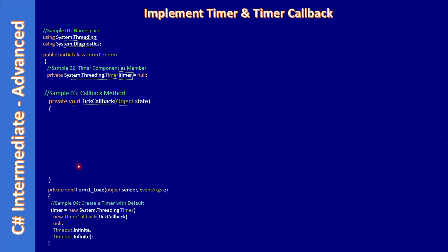During form load, we create the timer. First, we create a TimerCallback delegate and pass our TickCallback routine to it. We construct the callback method using the TimerCallback delegate and pass that as the first parameter to the Timer constructor. The second parameter is the state object — we are passing null since we don't want to send any data to the tick callback.